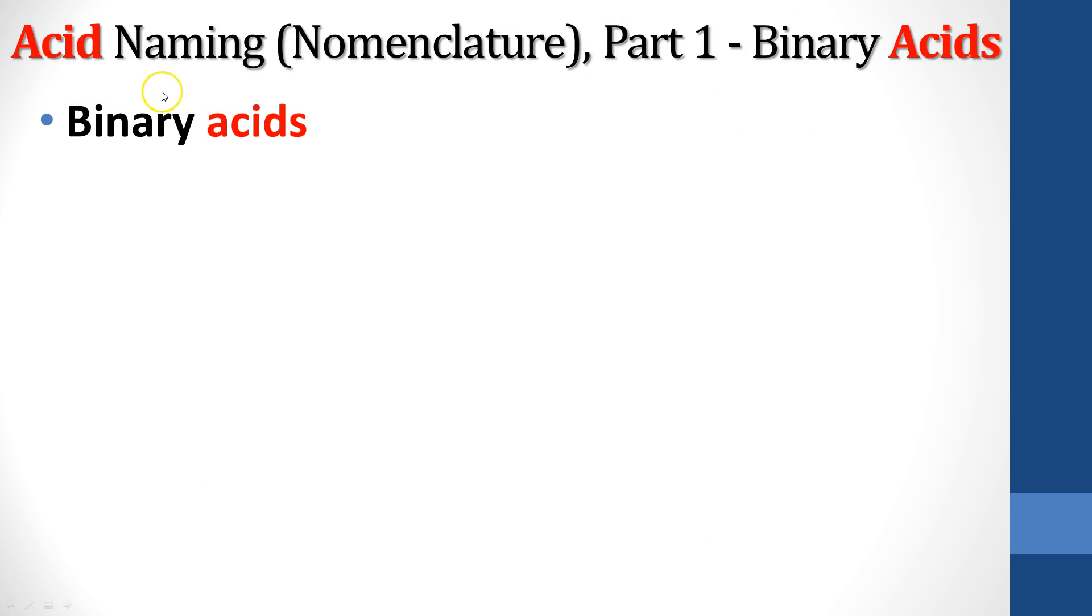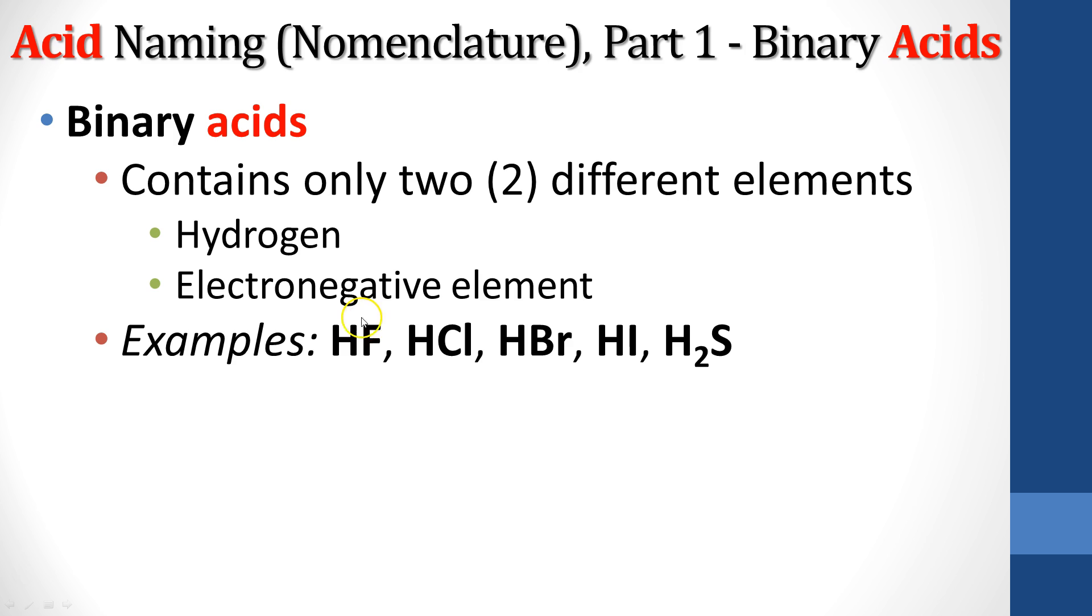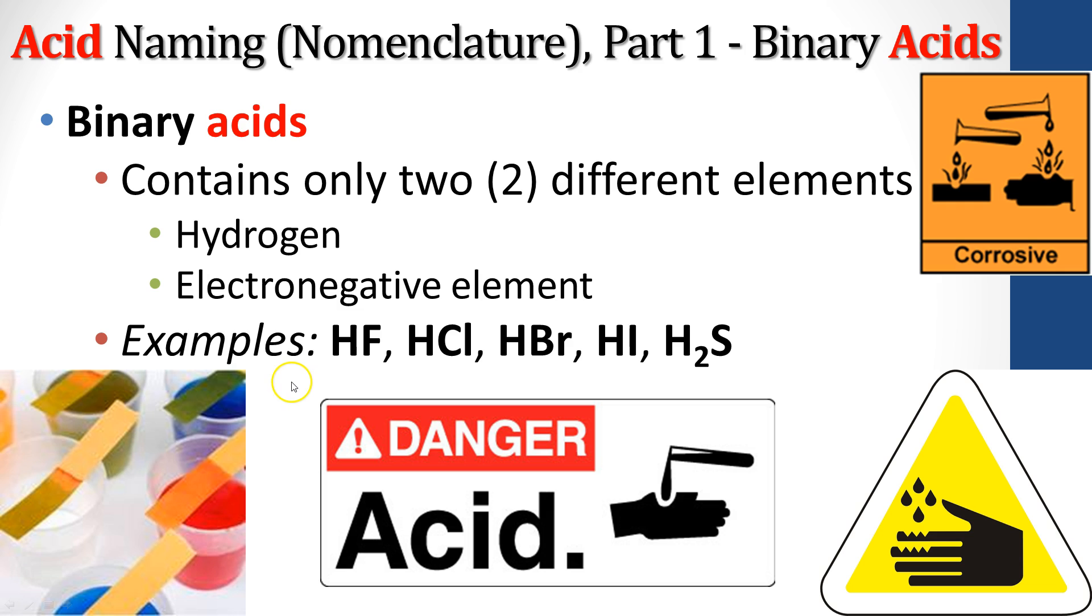So first we've got to talk about binary acids and how we name them. Binary acid, as the name implies, contains only two different elements. Hydrogen is always one of them. The other is going to be some form of an electronegative element. Examples: HF, HCl, HBr, HI, H2S. So these are only two different elements. This one technically has three atoms in it but only two different elements. So these are going to be some binary acids that we have.